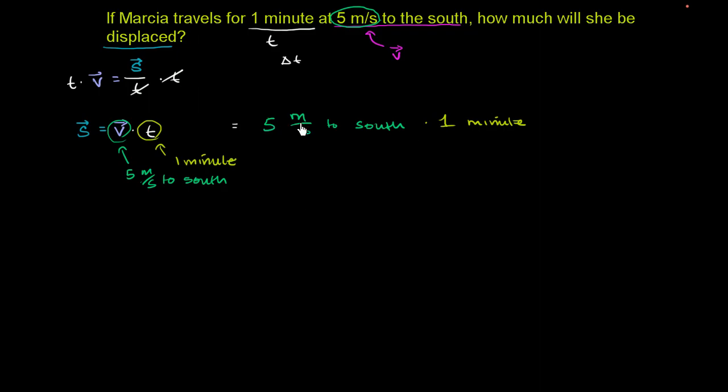So in order for it to all work out, you have to either convert the 5 meters per second to some amount of meters per minute, or you convert the 1 minute to seconds. In my mind it's easier to convert 1 minute to seconds. So this is the same thing, 1 minute times—we want to get rid of the minute. The minute is essentially in the numerator. We want to divide by minutes and we want to multiply by seconds.